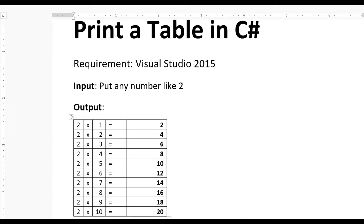2 is fixed on the left side and 1 to 10 will be incremented. So 2 into 1 is 2, 2 into 2 is 4, 2 into 3 is 6, 2 into 4 is 8, 2 into 5 is 10. You can see 2 is fixed — that's the number you want to generate the table for — and 1 to 10 is incremented. This is how you write code to generate a table.